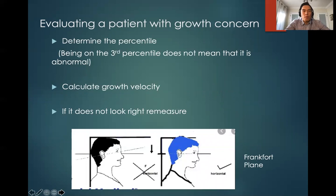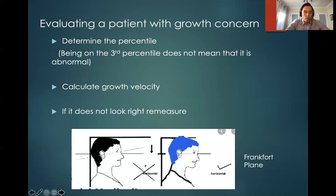Then you determine the height percentile. Going back to statistics: being on the 3rd percentile does not mean this is abnormal, because statistically speaking, there are three percent of normal children who are shorter than that. After you determine the height percentile, you calculate growth velocity.